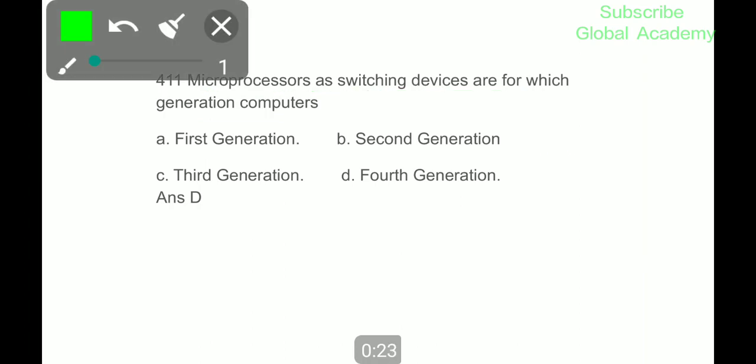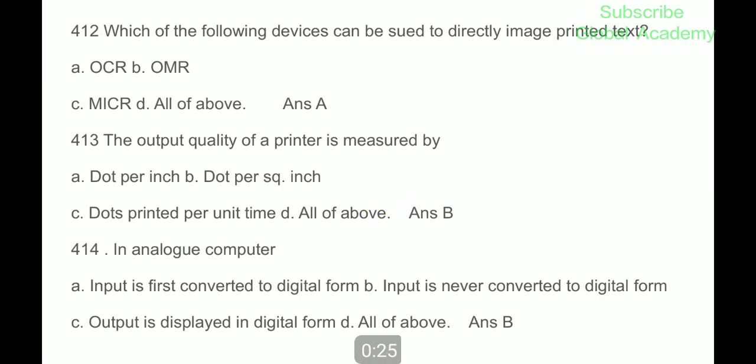Next question: Which of the following devices can be used to directly image printed text? OCR. Next question: The output quality of a printer is measured by? It is measured by dot per square inch. In analog computer, input is never converted to digital form.